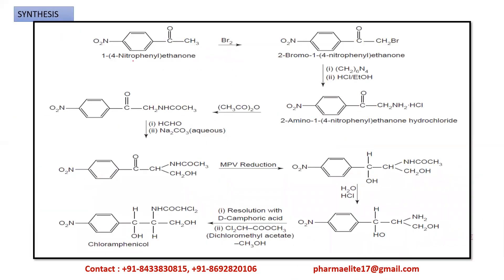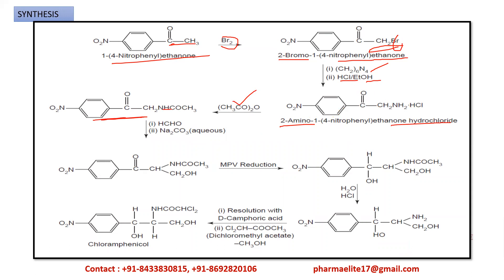Now we'll see the synthesis of chloramphenicol. The starting material is p-nitroacetophenone (1-(4-nitrophenyl)ethanone). After addition of bromine, we get 2-bromo-1-(4-nitrophenyl)ethanone. Then after adding hexamethylenetetramine with HCl and ethanol, we get 2-amino-1-(4-nitrophenyl)ethanone hydrochloride — the bromine is replaced by CH2NH2·HCl. After addition of acetic anhydride, the NH2 is converted to an NH-acetyl group. Then after addition of HCHO and sodium carbonate, a CH2OH group is added.